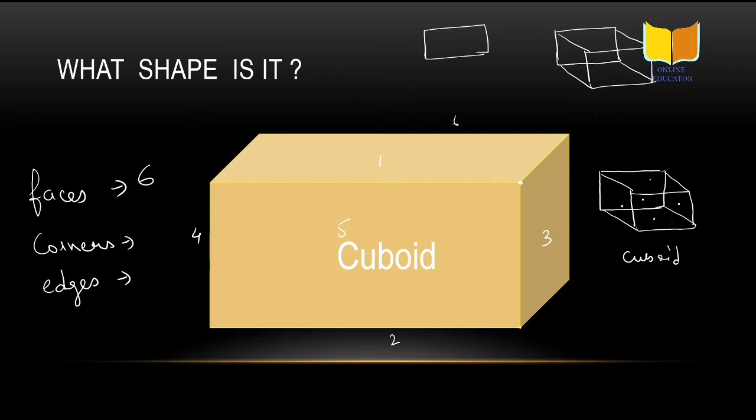Now how many corners are there? This is called corners. Four are here and four are here. One, two, this is three. One is not visible, so four, four, eight. Total how many corners are there? Eight.